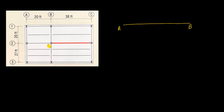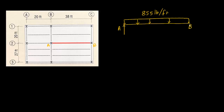We can now show this uniform dead load on a sketch. We have this beam — let's call this point A and this point B. On beam AB we have a uniformly distributed load of 855 pounds per foot. The supports at each end represent the contact points coming from the girder.